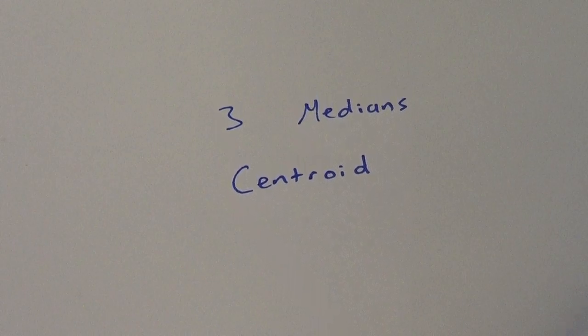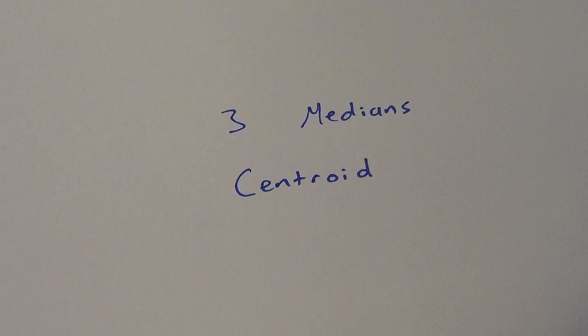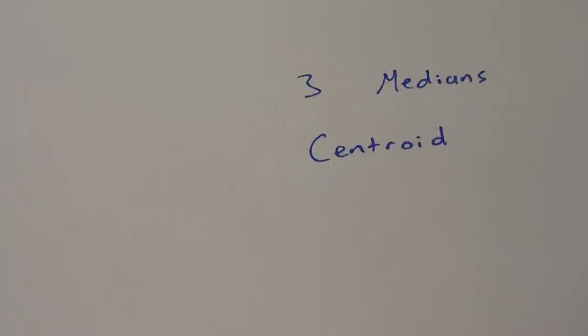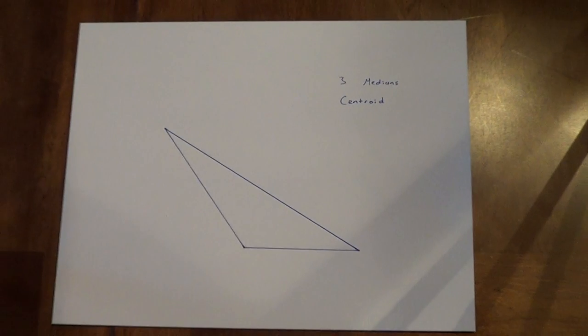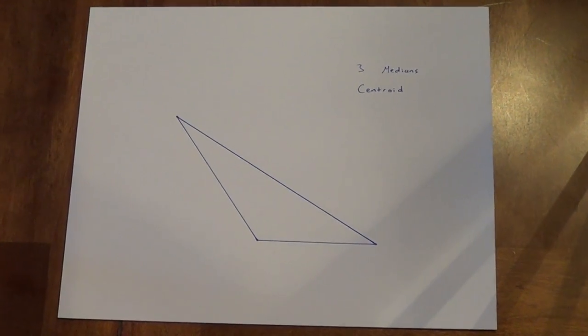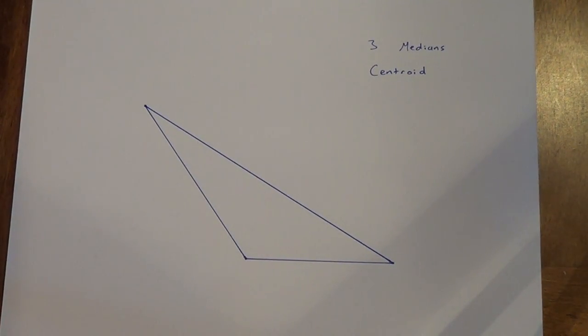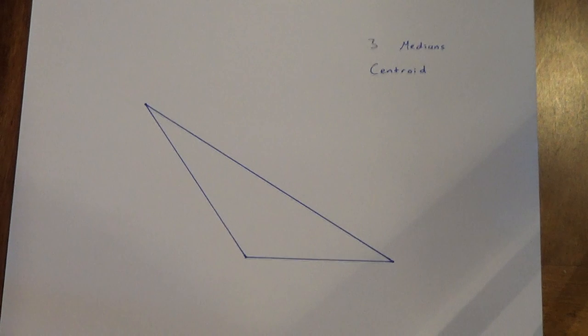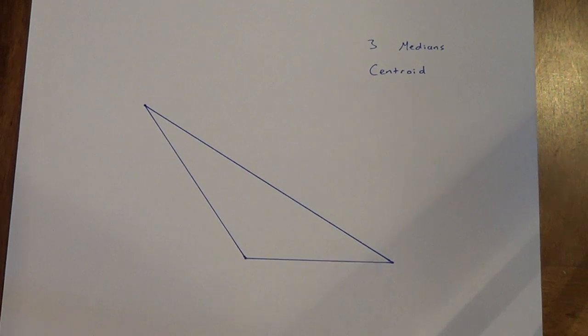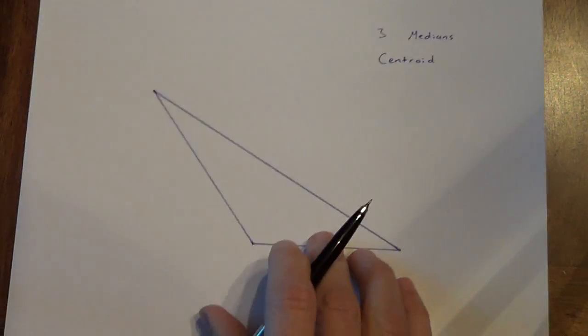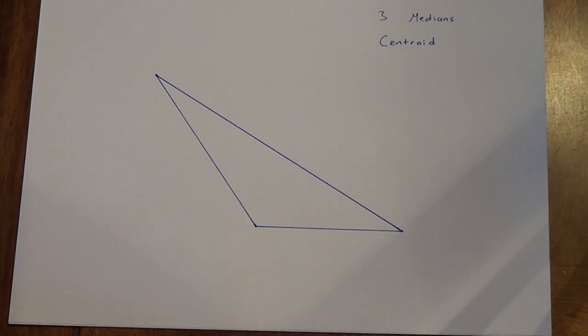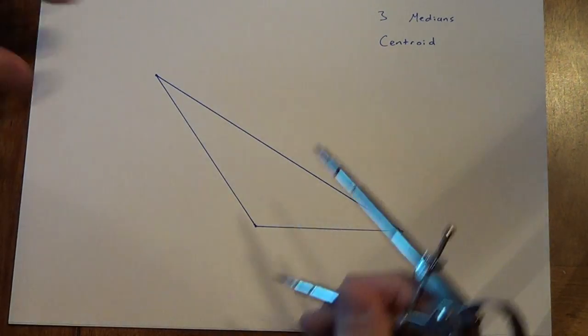Alright, next thing we're going to draw is the three medians of a triangle. Three medians, and they meet at a point called the centroid. So once again, I have a triangle ready to go here. This is obviously an obtuse triangle, and it actually is not going to matter on this one, whether it's acute or obtuse or a right triangle like it did for circumcenter.